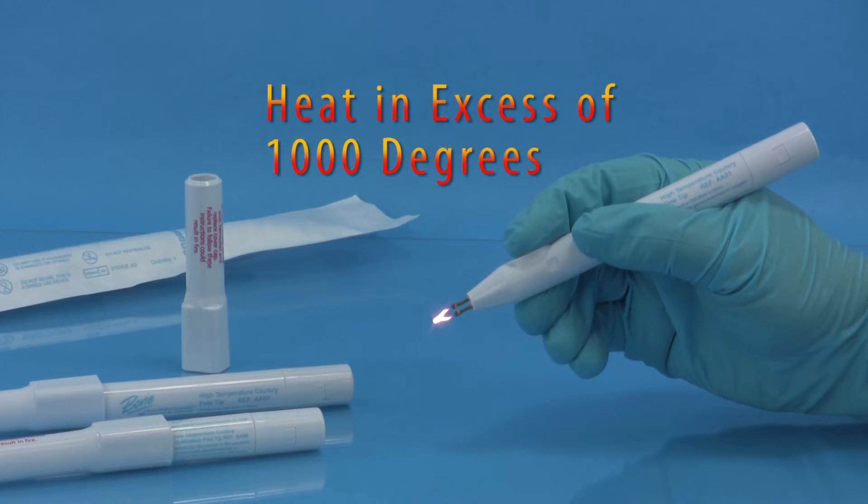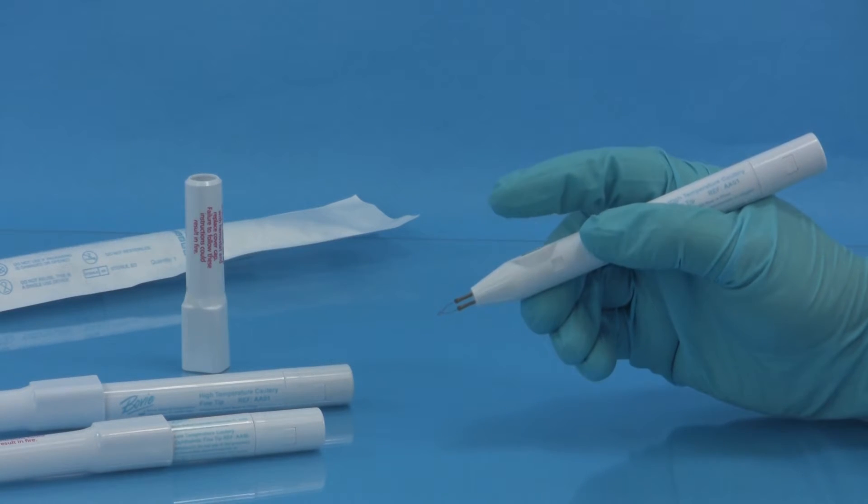Cauteries produce heat in excess of 1000 degrees Fahrenheit, which can cause burns or fire from misuse.